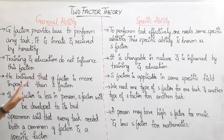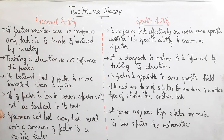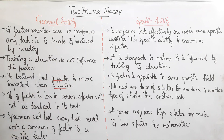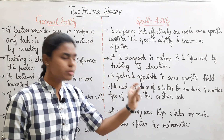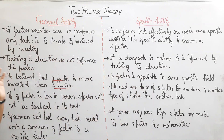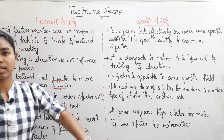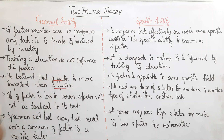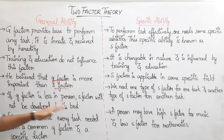Charles Spearman believed that the G-factor is more important than the S-factor. The S-factor is applicable only in specific fields. For example, the S-factor for cricket applies only in the cricket ground. If the G-factor is low in a person, the S-factor will not develop to its best.